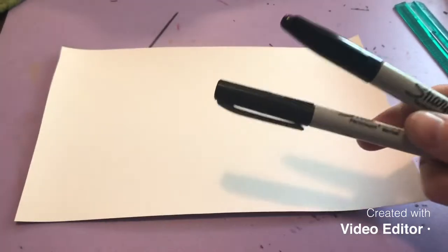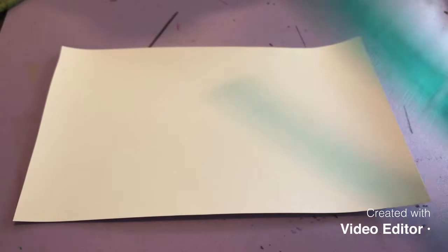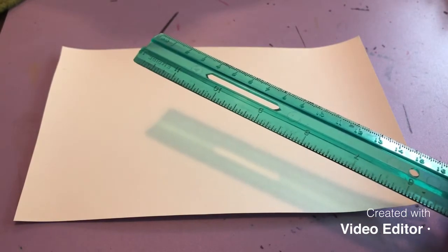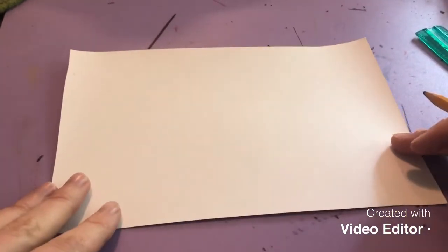For this project you're going to need a pencil, an eraser, markers - I'm using a thin Sharpie and a medium Sharpie, a ruler or a straight edge. So that could be a piece of cardboard or a notebook just so you can use that straight edge, and crayons because we're gonna add some color to this project.